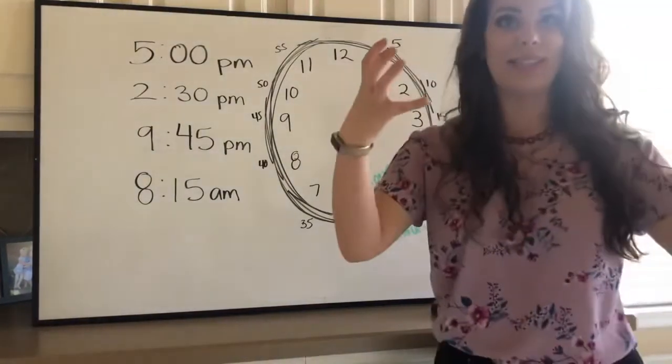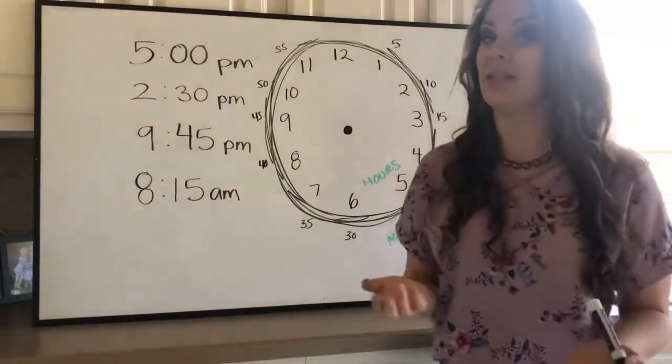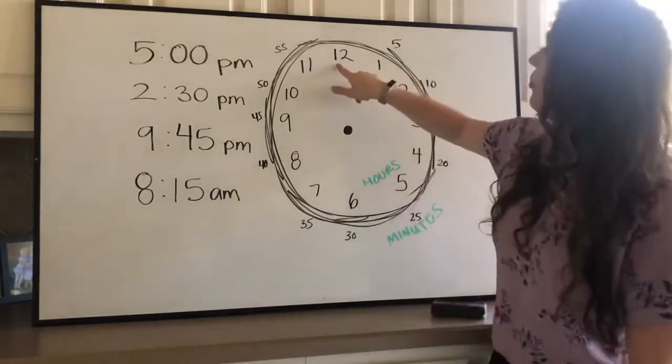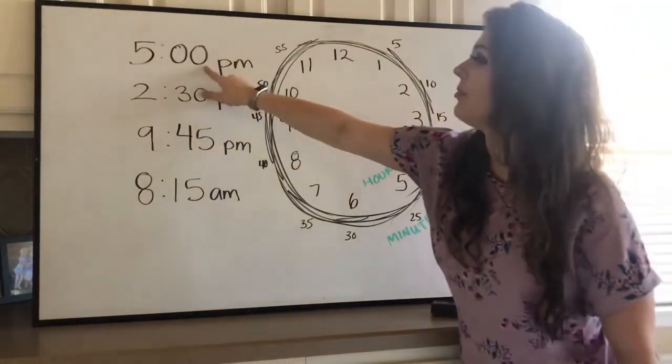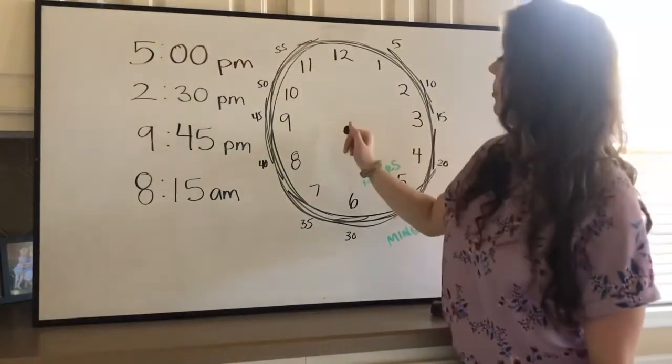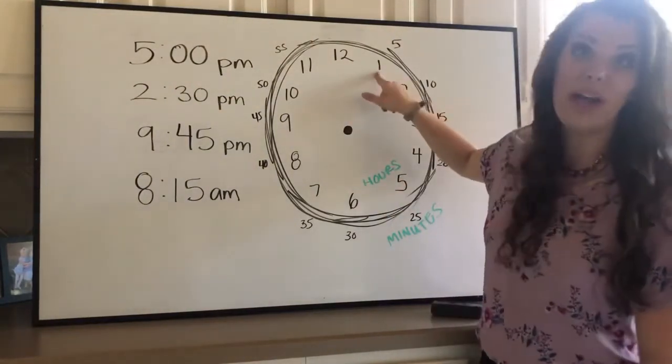And then our minutes, our minutes count by fives. Yes, we skip count by five based on the hour. So this is gonna be either zero or 60. I know that's kind of confusing. It's always gonna have the double zero though, if the minute arrow is straight up. But if it's over here at the one, the minutes will be five.